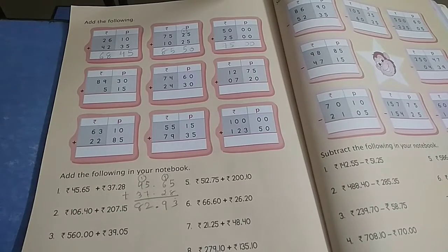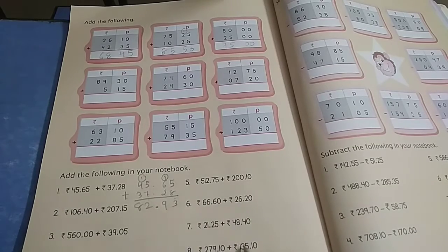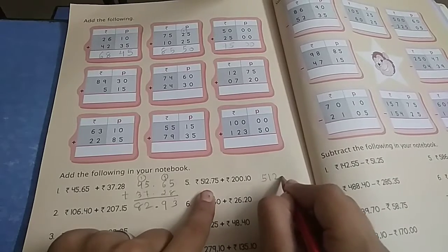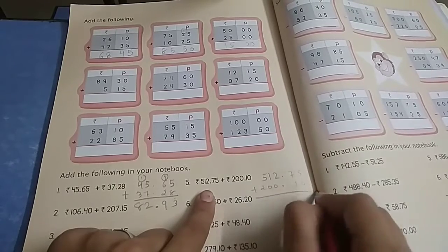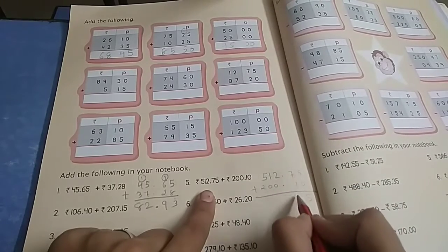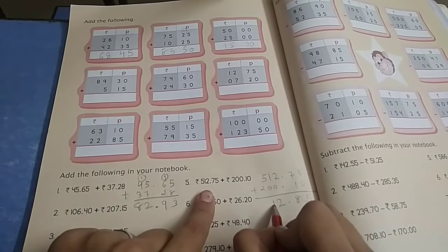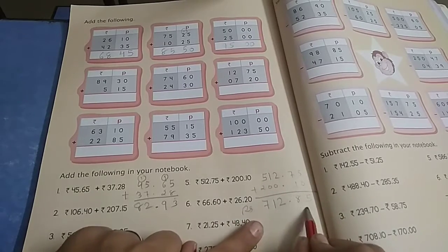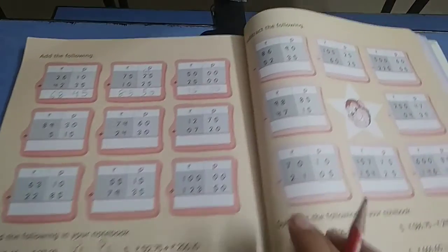82 rupees 93 paise. Similarly, you have to do all the addition sums. This one also: 512.75 plus 200. 5 plus 0 is 5, 7 plus 1 is 8, 2 plus 0 is 2, 1 plus 0 is 1, 5 plus 2 is 7. That's 712.85 rupees. Do this exercise in your maths rough book or fair book.